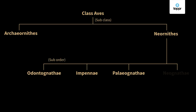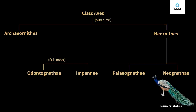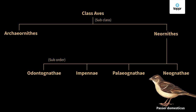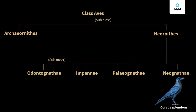The last super order is Neognathae, which includes small-sized flying birds of the modern era. Wings are well-developed and the keel in the sternum is highly developed. Crop glands secrete pigeon milk, the beak is toothless, and the sound-producing syrinx is present. Examples include Pavo cristatus (peacock — the national bird of India), Columba livia (blue rock pigeon), Passer domesticus (sparrow), and Corvus splendens (crow).